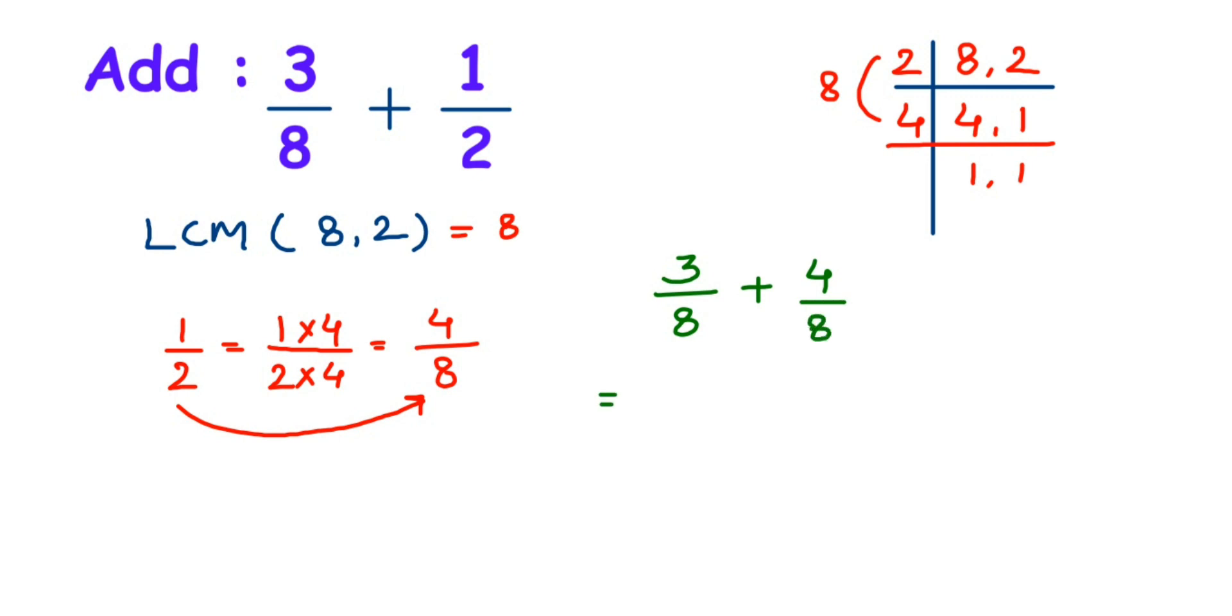Now see, denominators are the same. We have to just add the numerators, keeping the denominator the same, which is 8. Add the numerators: 3 plus 4, which is 7. So 7 by 8 will be the answer.